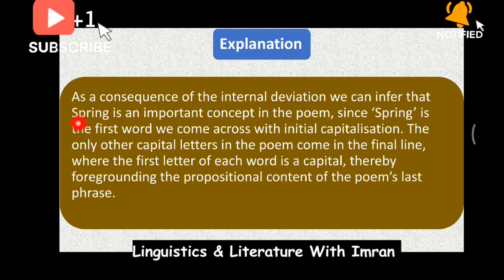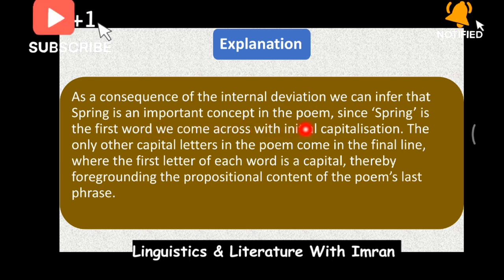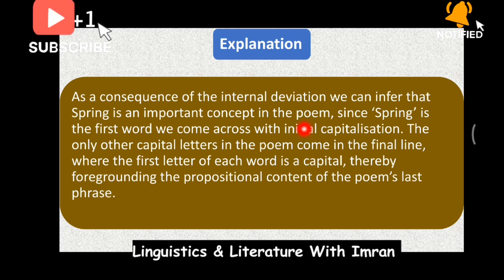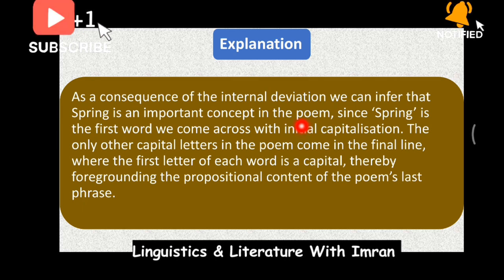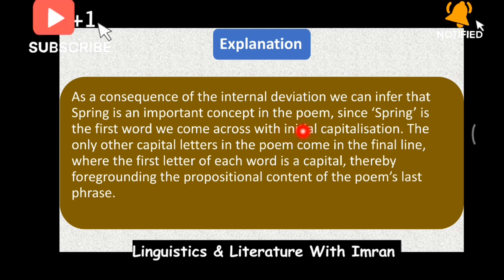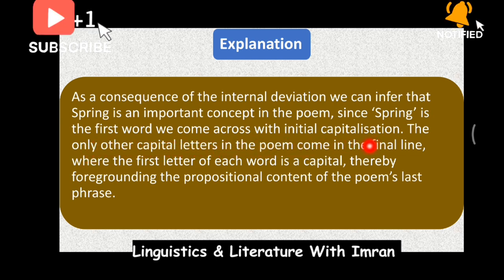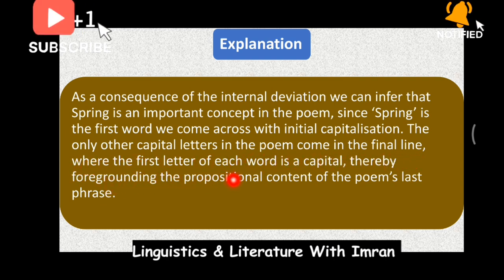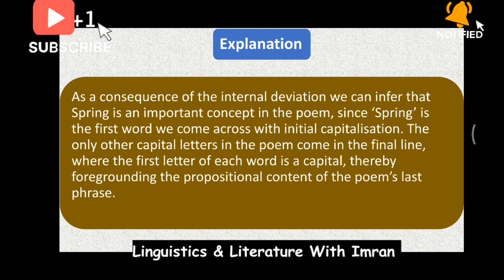As a consequence of this internal graphological deviation, we can infer that 'spring' is an important concept in the poem. Spring is capitalized — it is an important concept. Since 'spring' is the first word we come across with initial capitalization, the only other capital letters in the poem come in the final line where the first letter of each word is capitalized, thereby foregrounding the prepositional content of the poem's last phrase.